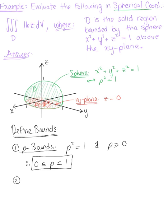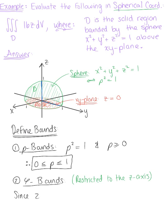When we find the phi bounds, we want to keep in mind that phi is restricted to the z-axis. Looking at our solid region, we can see that z is being restricted to positive values above the xy plane. Since z must be greater than or equal to 0, this tells us that phi must be greater than or equal to 0 and less than or equal to pi over 2.